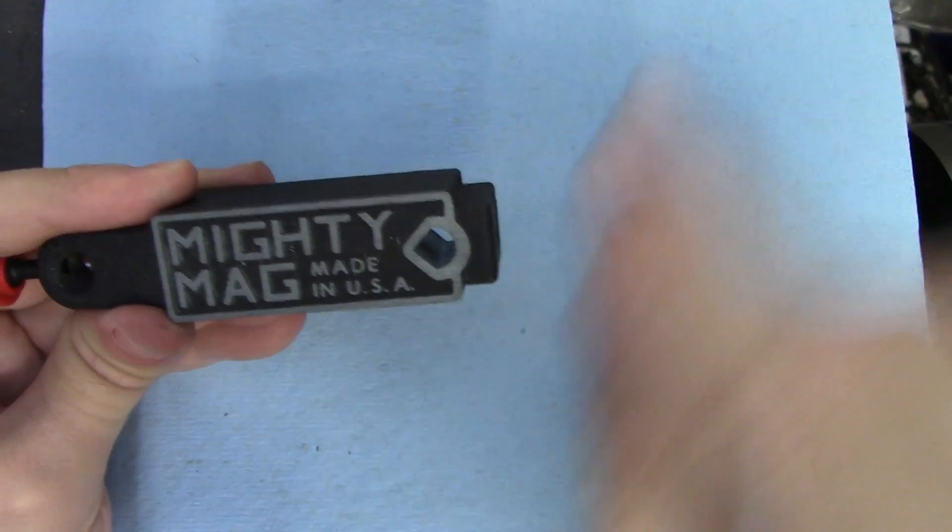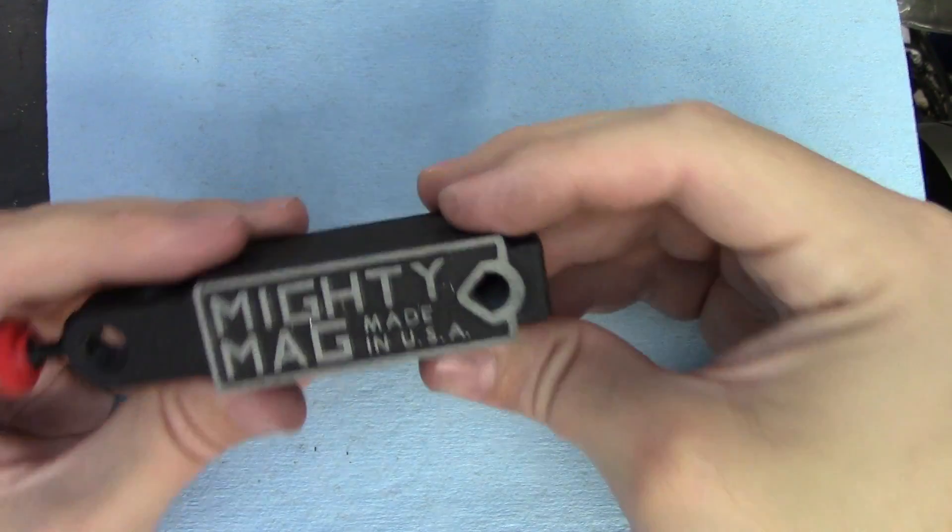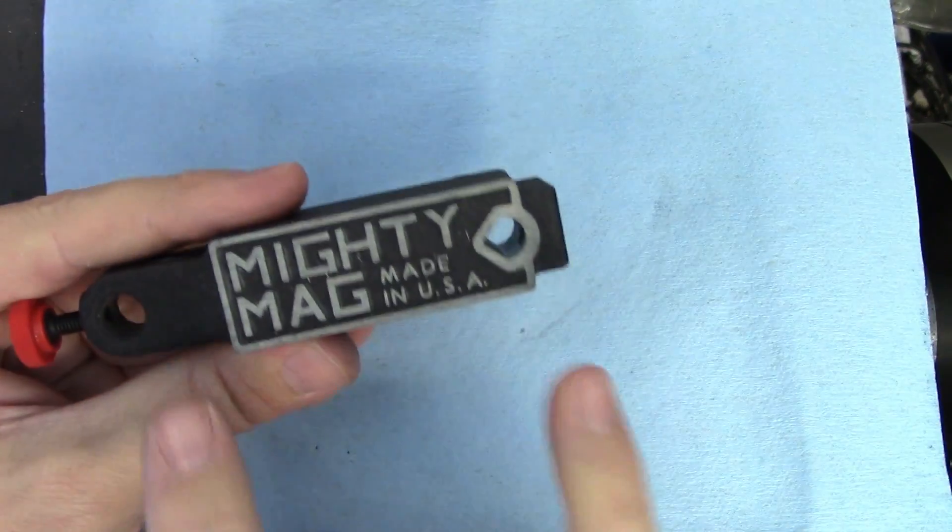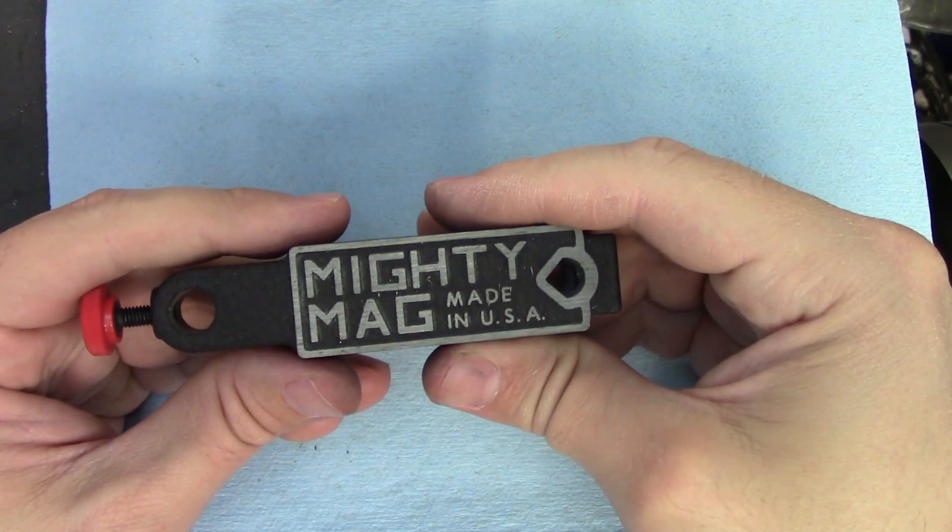There's also a teardrop shaped hole down on this end for holding a variety of other round shanks. I have never actually found an occasion where I needed to use these two holes, but if you do, I'd love to hear about it down in the comments.